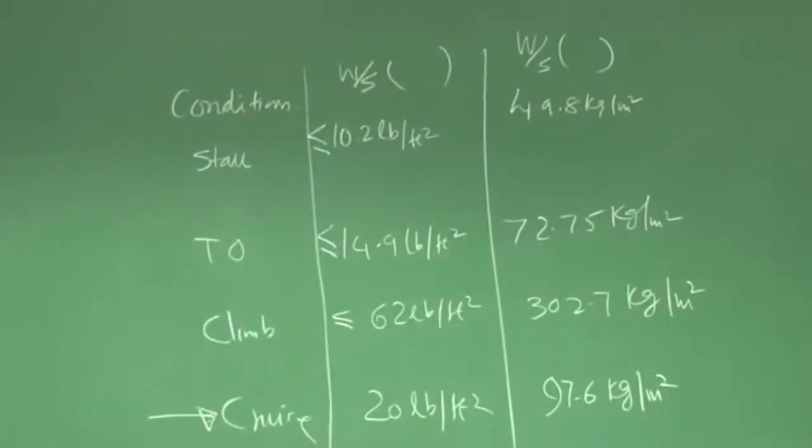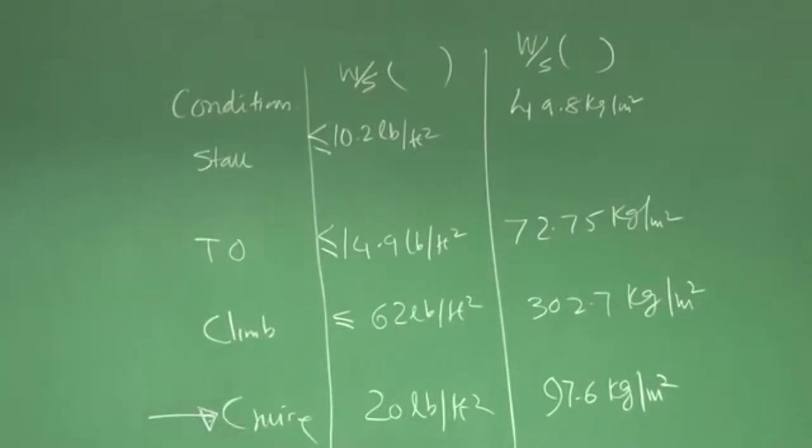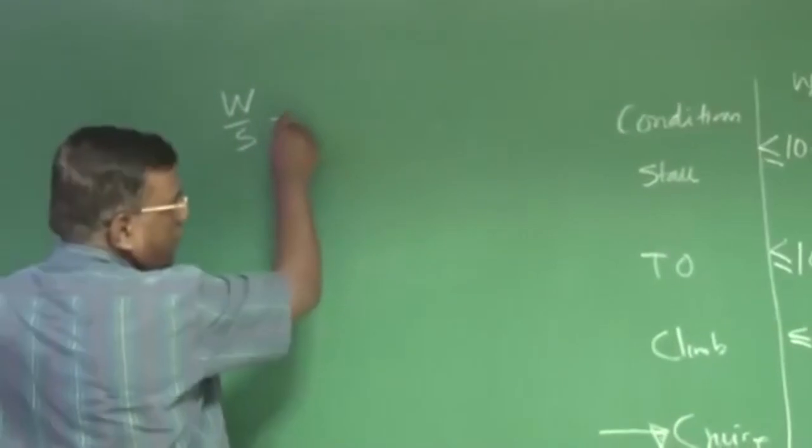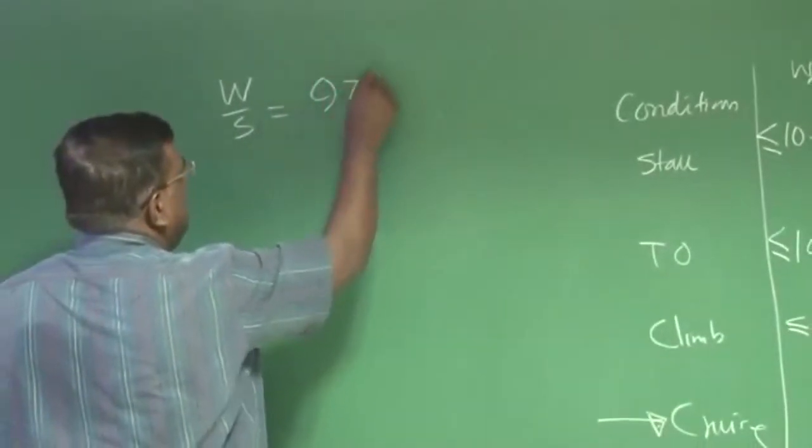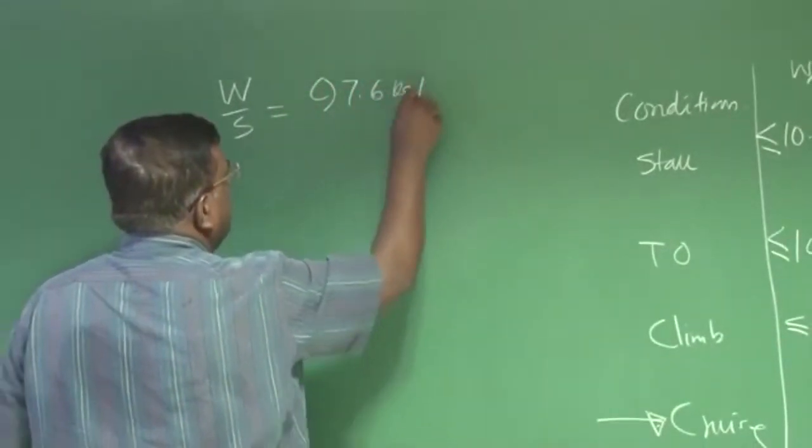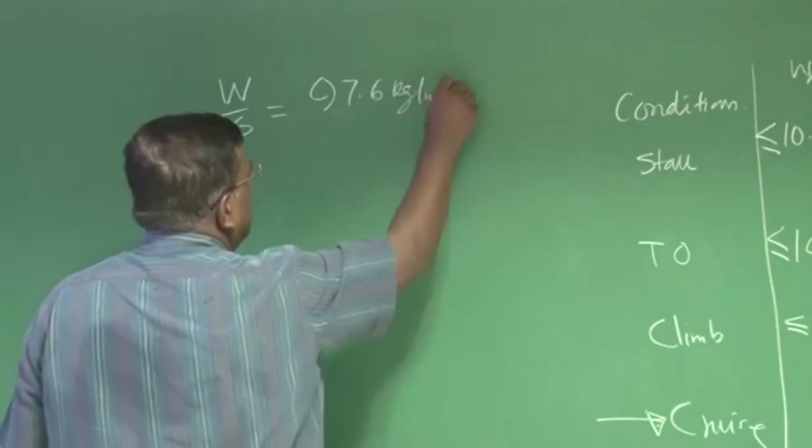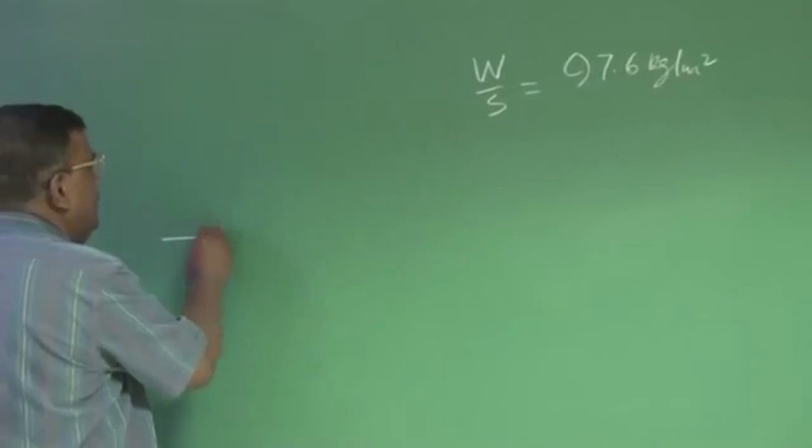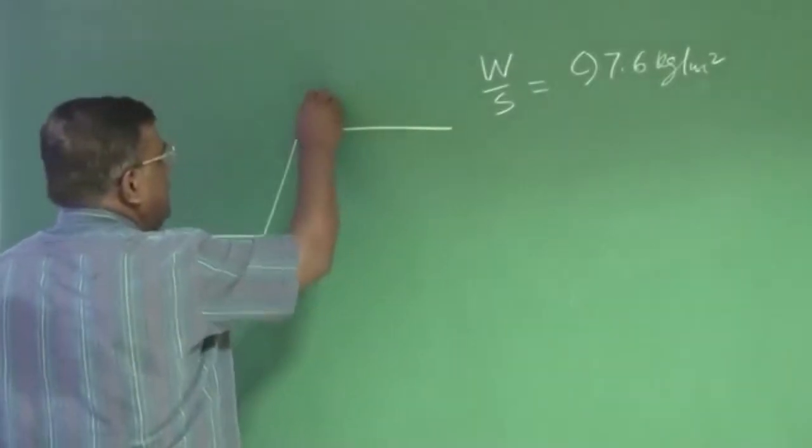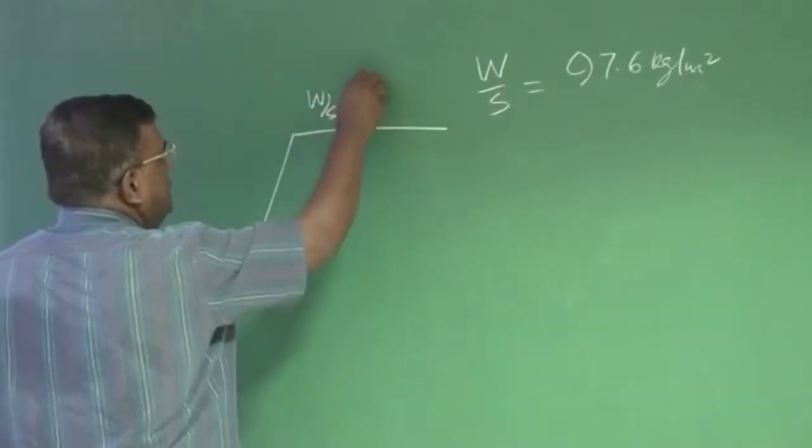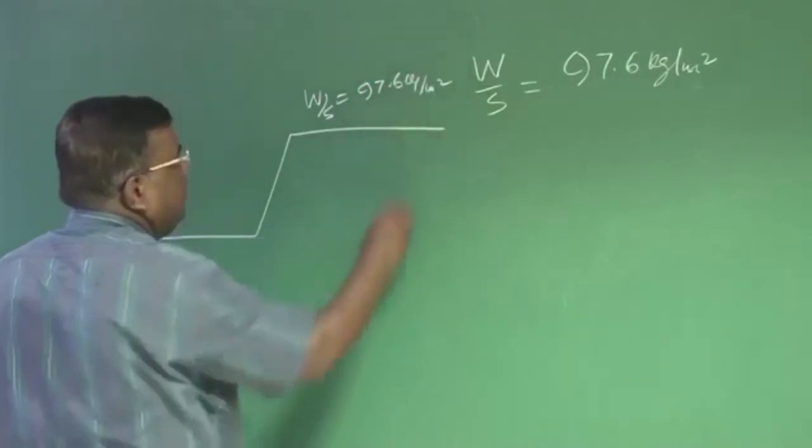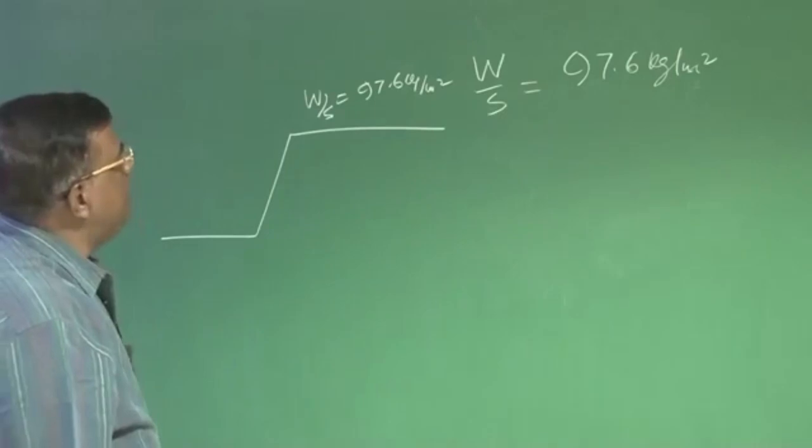Let us say I give weightage to cruise condition. It tells me that W by S should be around 97.6 kg per meter square. And it goes without saying what we are meaning thereby.